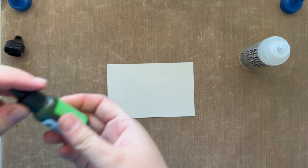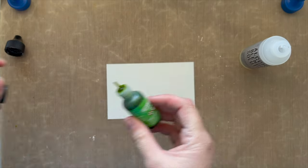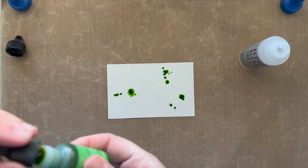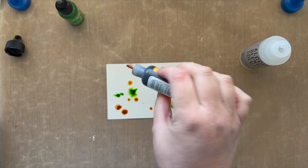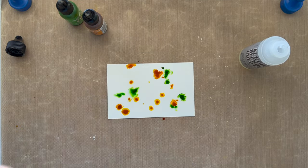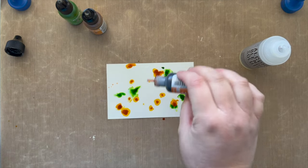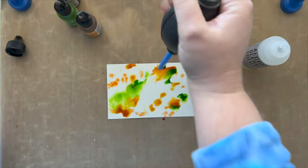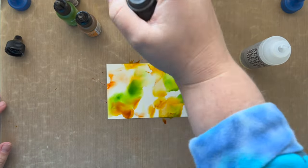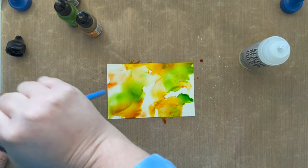So I have some Yupo paper and I've laid down some blender solution, and I have three different alcohol ink colors I'm going to be using today. I have a green, a yellow, and an orange, and then more of an orangey yellow. So not quite yellow, but not as bright orange as that third color I laid down.